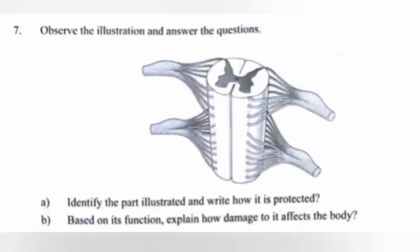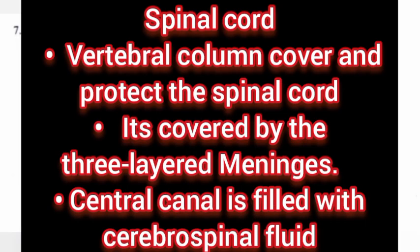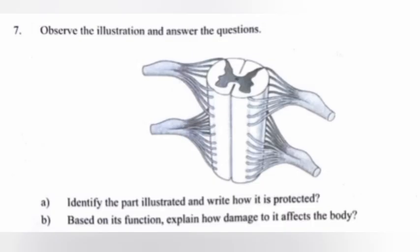Question 7: Observe the illustration and answer the questions. Part a: Identify the part illustrated and write how it is protected. Answer: Spinal cord. The vertebral column covers and protects the spinal cord. It is also covered by the three-layered meninges, and the central canal is filled with cerebrospinal fluid.